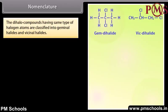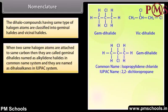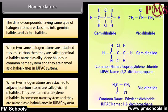Dihalo compounds having the same type of halogen atoms are classified into geminal halides and vicinal halides. When two same halogen atoms are attached to the same carbon, they are called geminal dihalides, named as alkylidene halides in the common name system and as dihaloalkanes in the IUPAC system. When two halogen atoms are attached to adjacent carbon atoms, they are called vicinal dihalides, named as alkylene dihalides in the common name system and as dihaloalkanes in the IUPAC system.